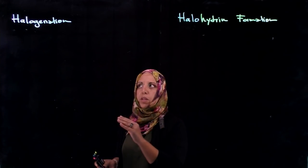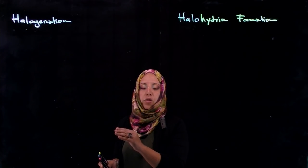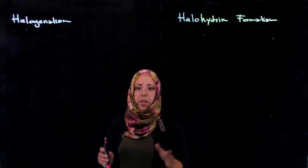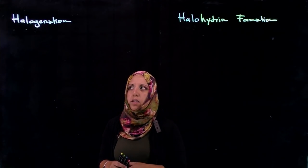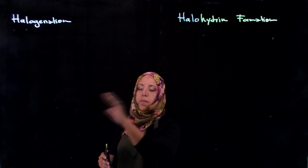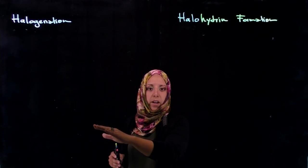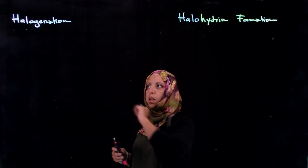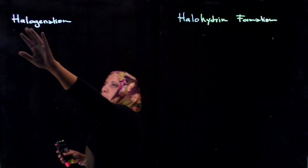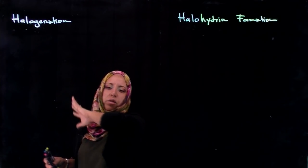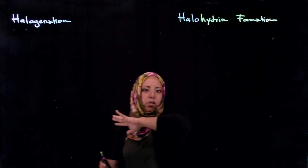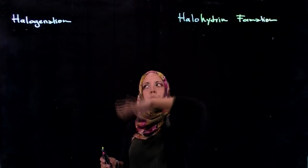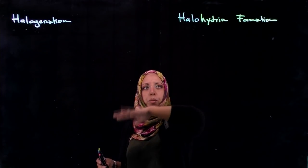Welcome. In this video we're going to be talking about halogenation reactions and halohydrin formation. Similar in some ways, they're addition reactions to pi bonds. Just like the name implies, halogenation involves adding two halogens across a carbon-carbon double bond or a triple bond.